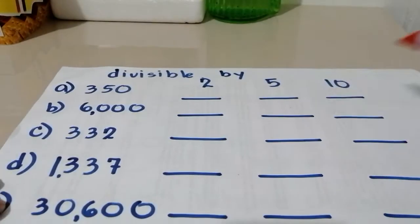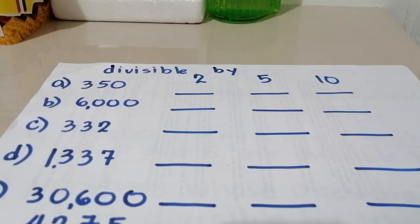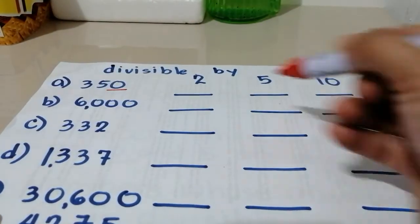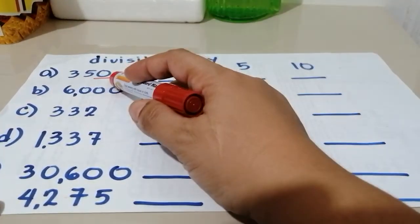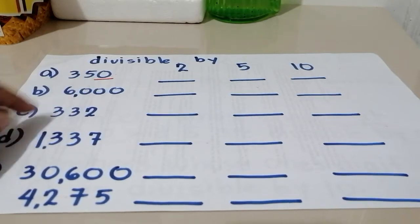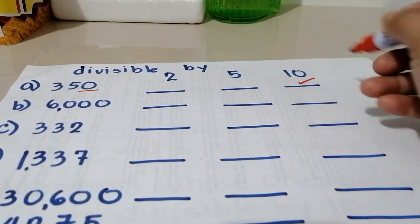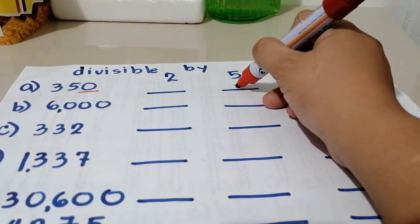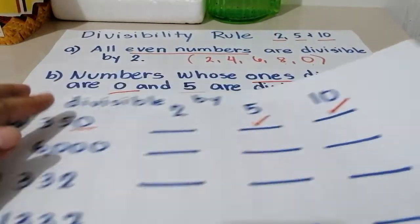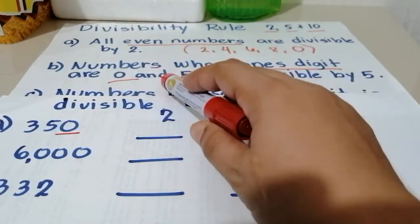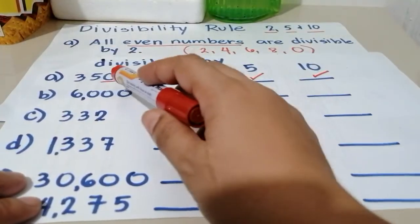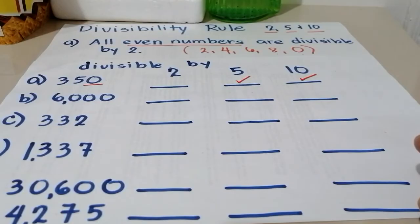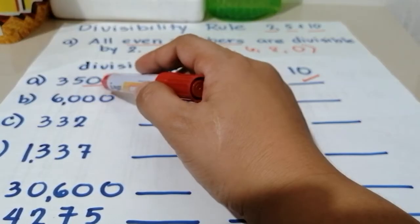So for this one — 350. All we need to do, lagi lang natin titignan, to know if the number is divisible by 2, 5, and 10 is the ones digit, the last digit. The last digit of 350 is 0. At dahil 0 siya, divisible siya by 10 kasi yun yung ending niya. Also, since 0 siya, pwede din siyang divisible by 5. Is this number divisible by 2? Yes.